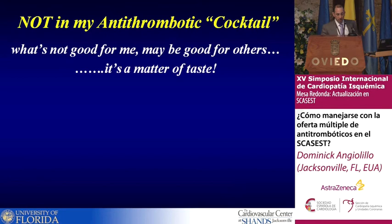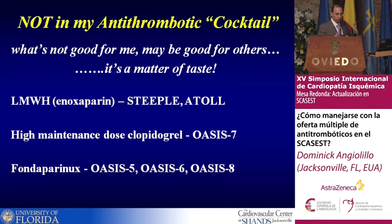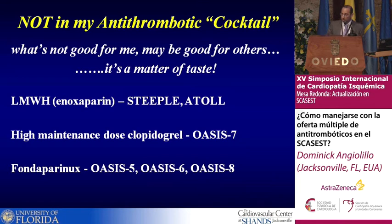I want to at least acknowledge enoxaparin, heparin plus clopidogrel, and fondaparinux. Enoxaparin in my practice is not that useful — I do most of my cases radially where I give 3,000 units of heparin through the radial sheath. If they come on enoxaparin, I typically switch to bivalirudin. Heparin plus clopidogrel from ACUITY-7: in my opinion it was a negative trial — the primary endpoint was not met and we have better agents. Fondaparinux: looking at the OASIS-5 trial, there's a reduction in bleeding, but we know we need to integrate using full-dose unfractionated heparin, as we learned from OASIS-8, to reduce catheter-induced thrombosis. So I really don't see that as too useful in my practice.